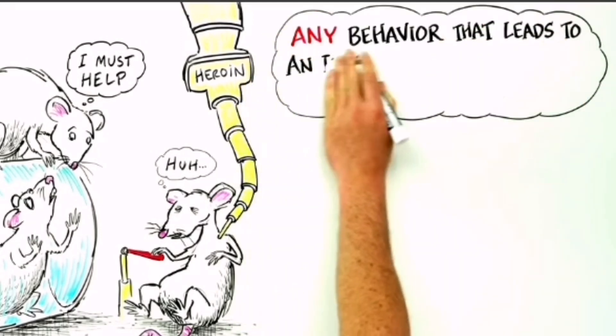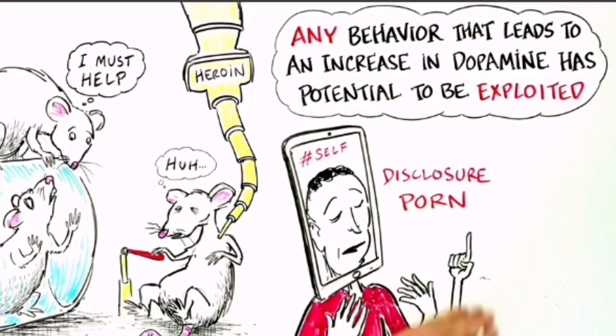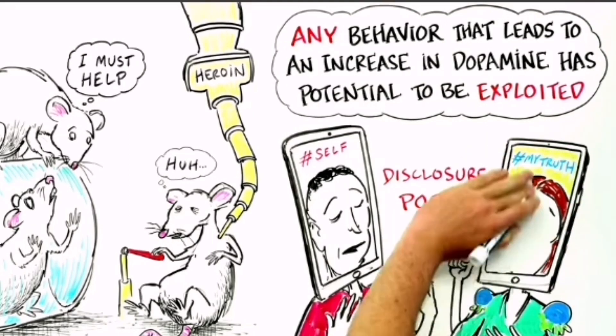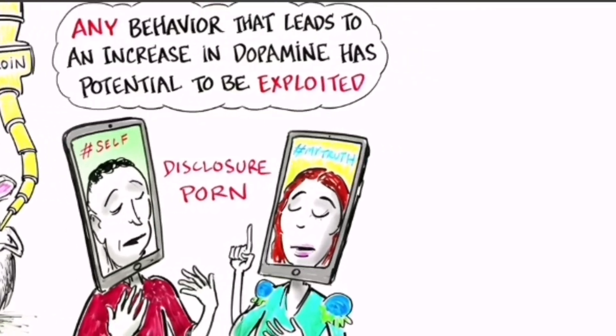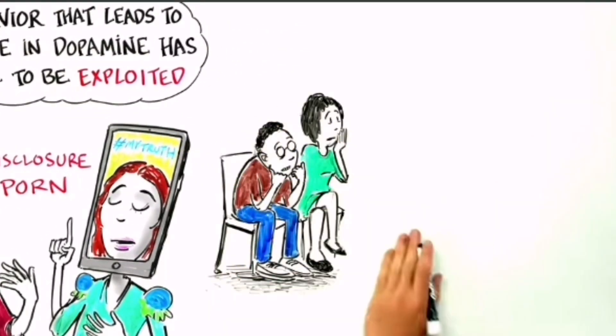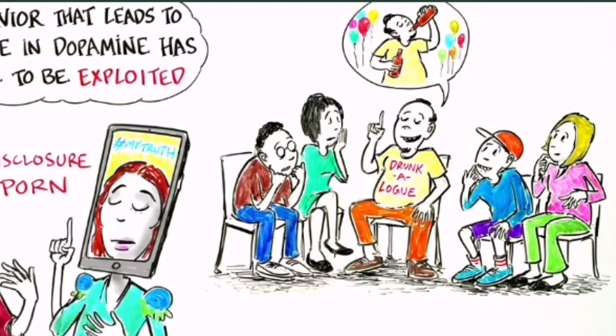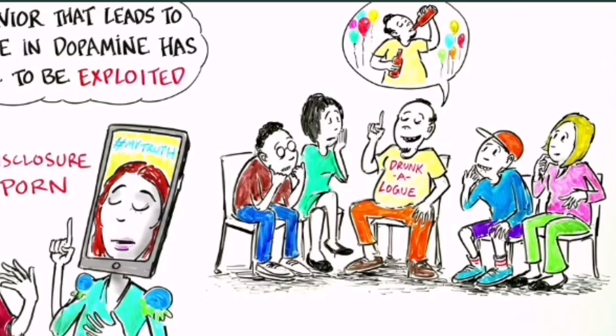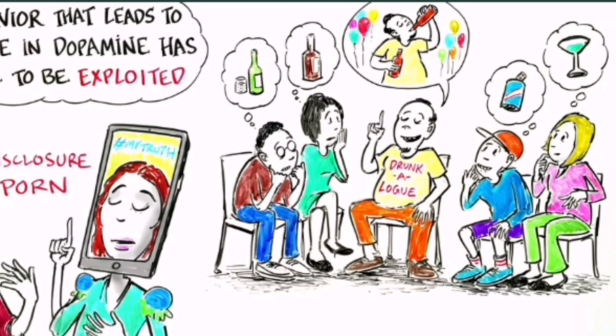Any behavior that leads to an increase in dopamine has the potential to be exploited. What I'm referring to is a kind of disclosure porn that has become prevalent in modern culture, where revealing intimate aspects of our lives becomes a way to manipulate others for a certain type of selfish gratification, rather than to foster intimacy through a moment of shared humanity. There is a well-known phenomenon in AA called drunkologues, referring to tales of intoxicated exploits that are shared to entertain and show off rather than teach and learn.